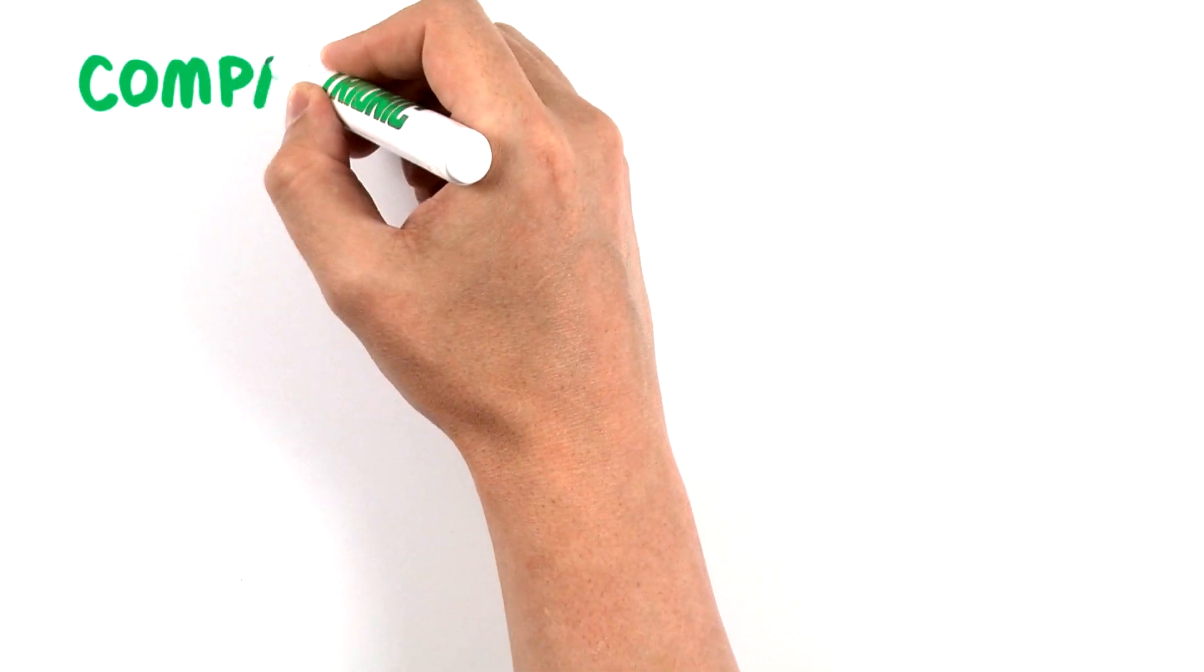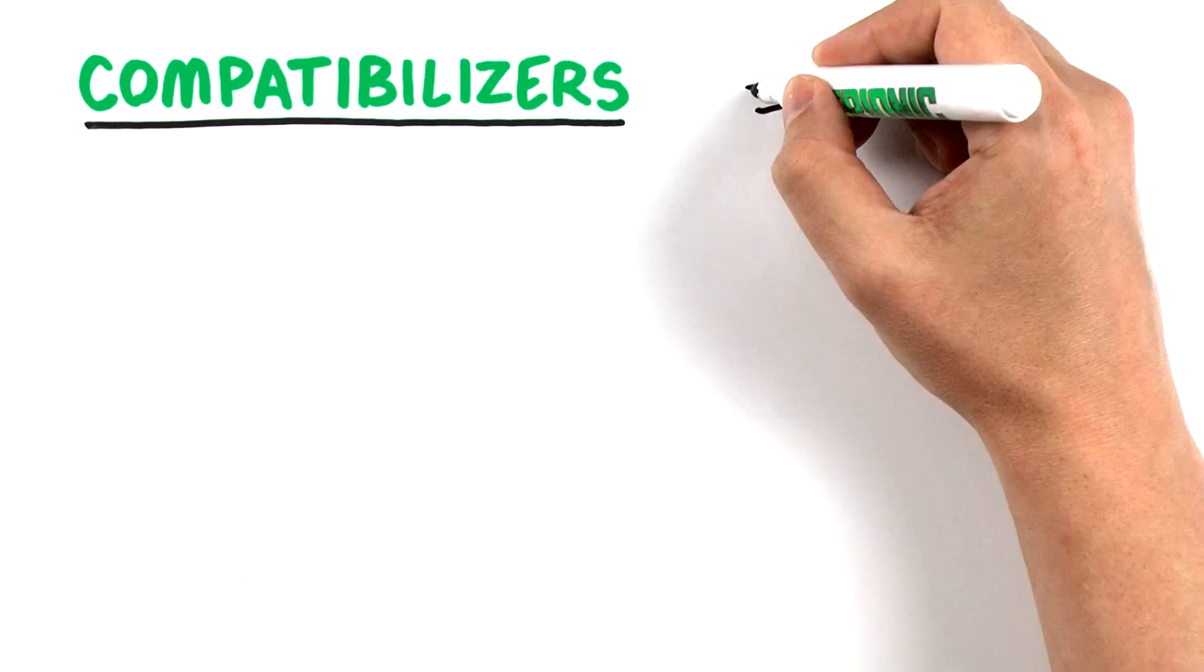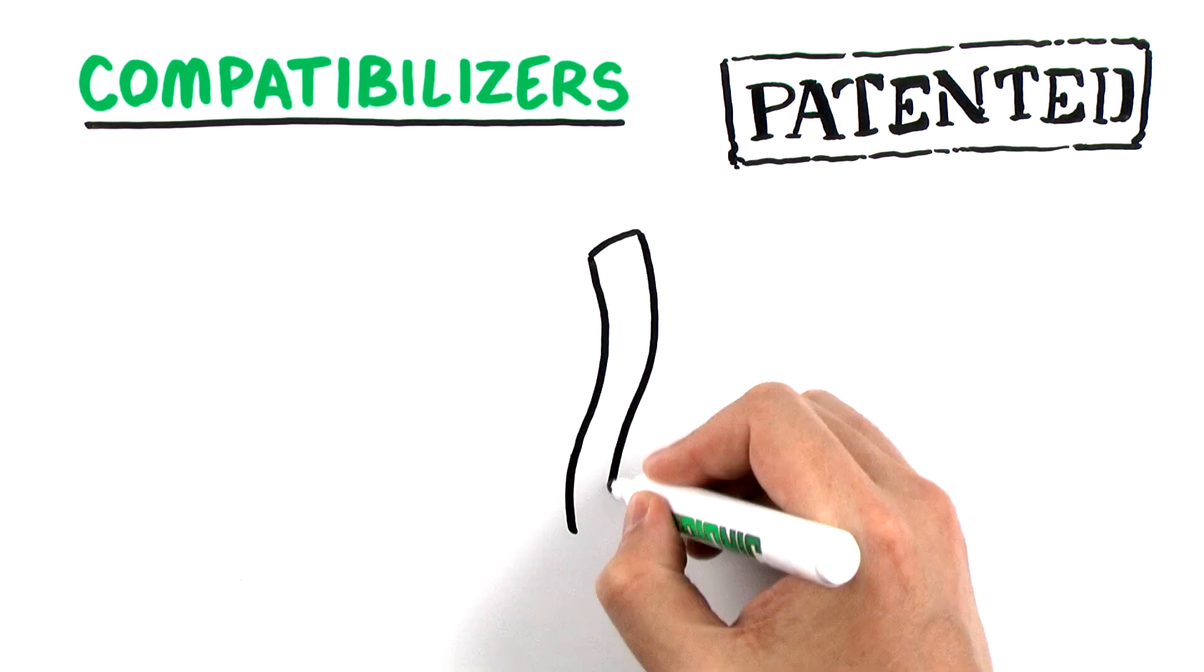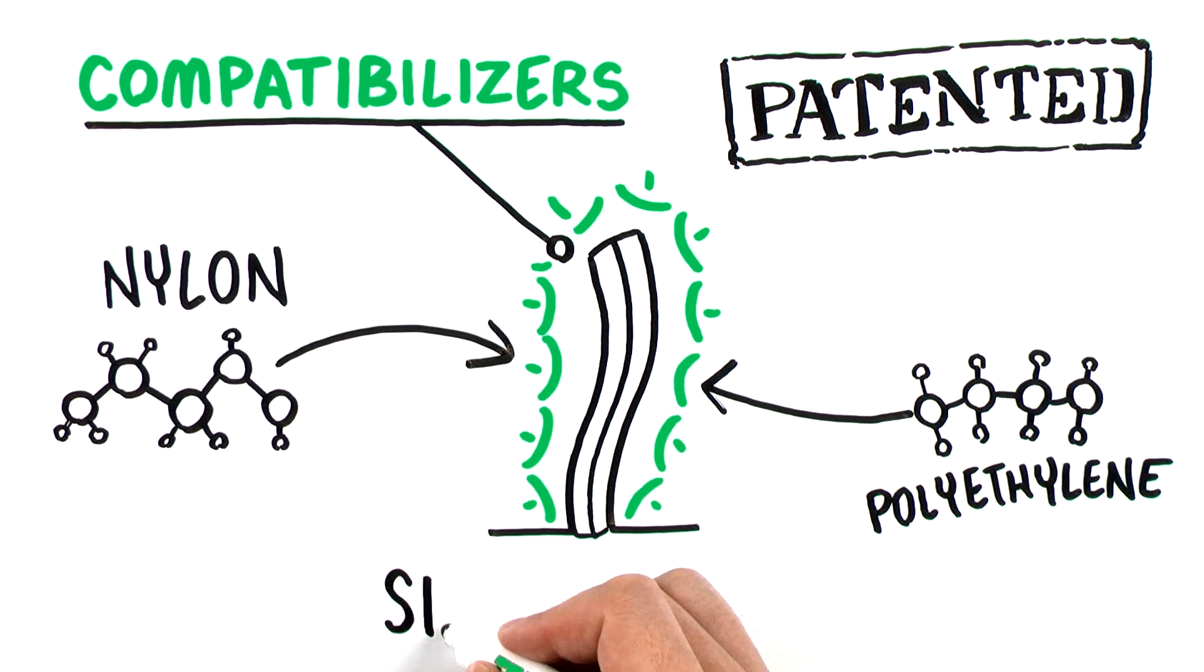They did it with compatibilizers. Wait. Compatible what? Compatibilizers. Sport Group's patented process uses chemical compatibilizers to fuse the nylon and polyethylene molecules into a single fiber.